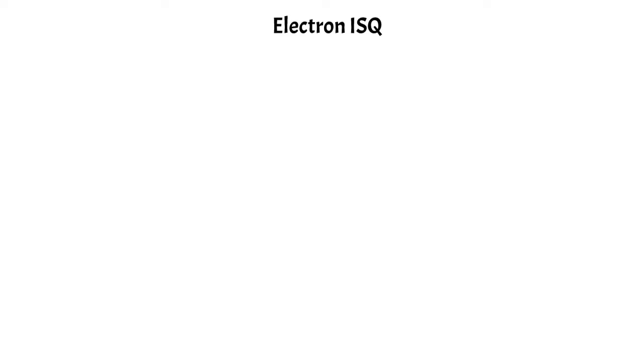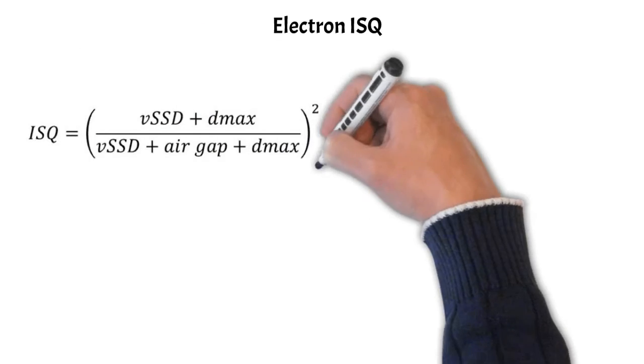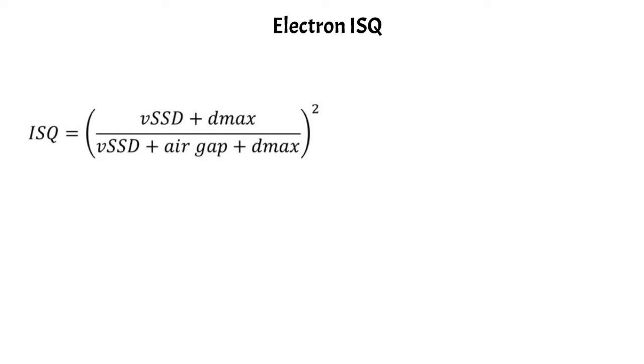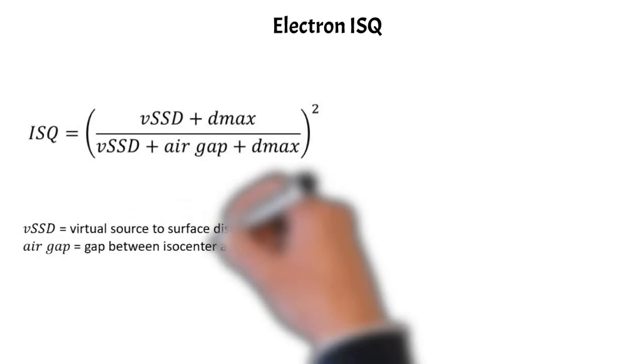I think it's most helpful to portray what the virtual SSD is by talking about the electron inverse square correction. You can see it makes use of this concept of the virtual SSD, which is your vSSD term there, and it also makes use of an air gap, which we'll talk about in a little bit.